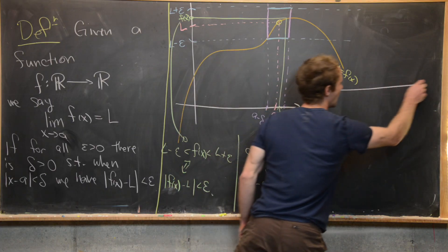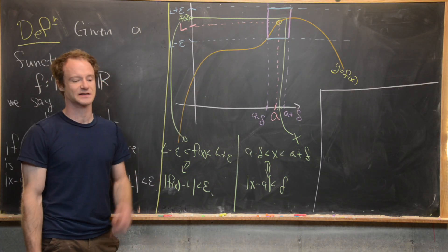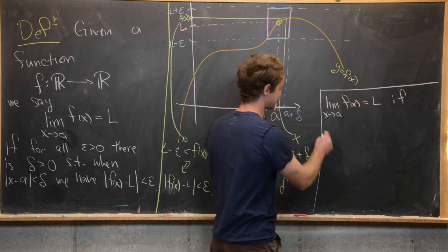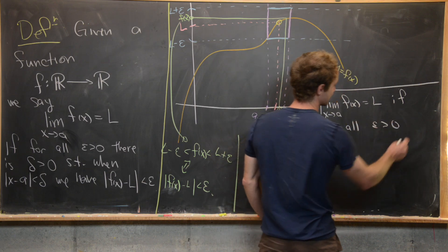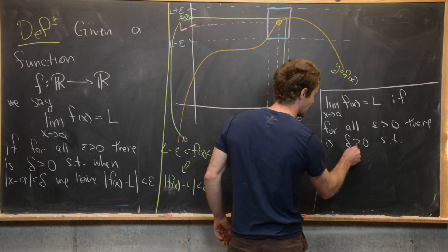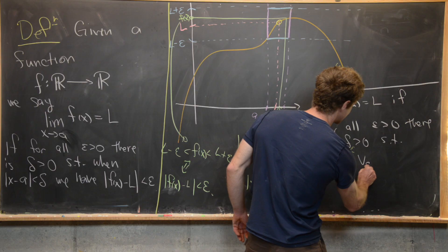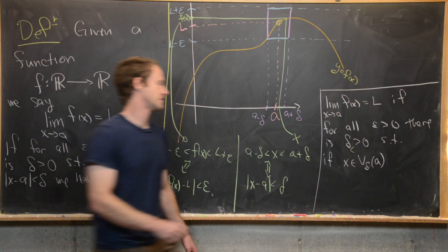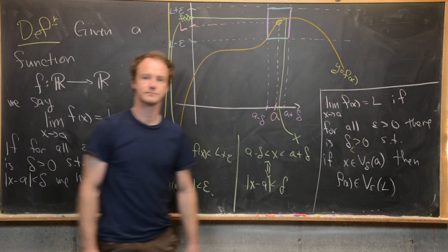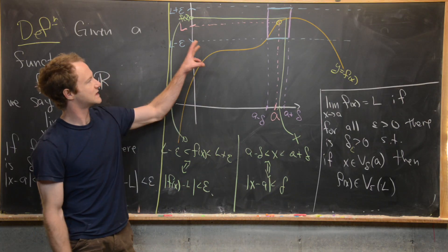Here's another formulation of the definition of a limit using epsilon neighborhoods. The limit as x goes to a of f(x) equals L if for all epsilon greater than 0, there is a delta greater than 0 — sometimes written delta_epsilon to emphasize it depends on epsilon — such that if x is in the delta neighborhood centered at a, then f(x) is in the epsilon neighborhood centered at L. This notion of delta and epsilon neighborhoods is equivalent to those inequalities and to what's shown in the picture.